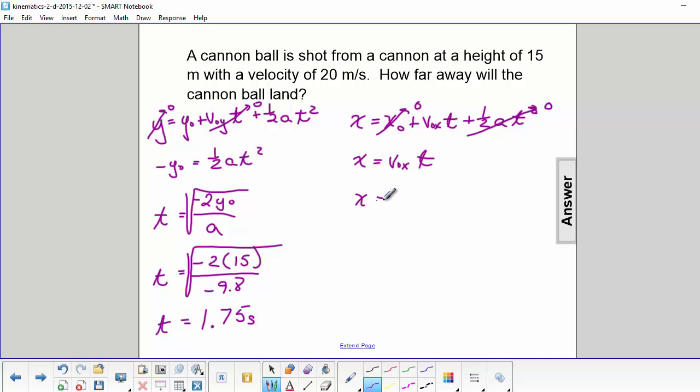v0 in the x direction was 20 meters per second and t we just found was 1.75 seconds. So then x becomes about 35 meters.